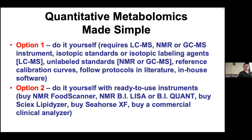If quantitation is important, how do you make it simple? You can do quantitative metabolomics yourself. There are published protocols, and if you read them carefully with some chemistry knowledge, you can do it. You need an instrument and money for isotopic standards or labeling reagents. You can do this for LC-MS, or by NMR or GC-MS without labeled agents. You need to make reference calibration curves—it's dull, but important. You can use existing software, develop in-house software, or use vendor-supplied software.